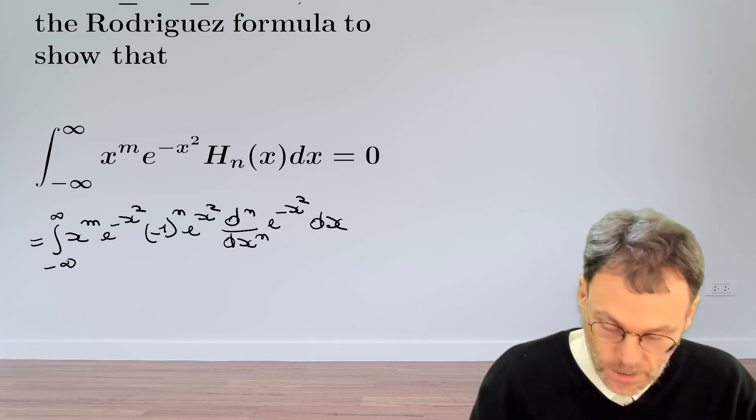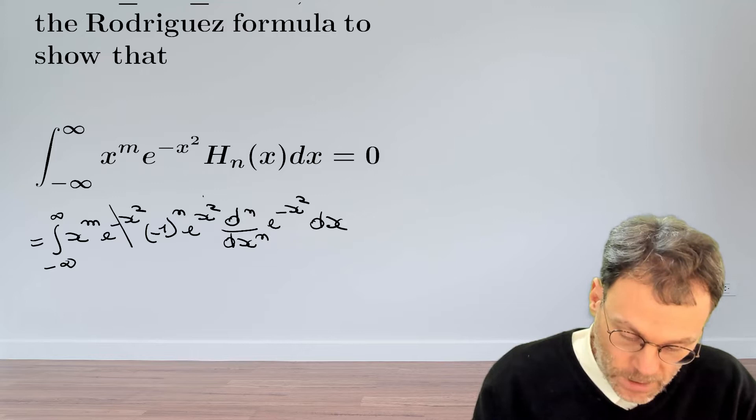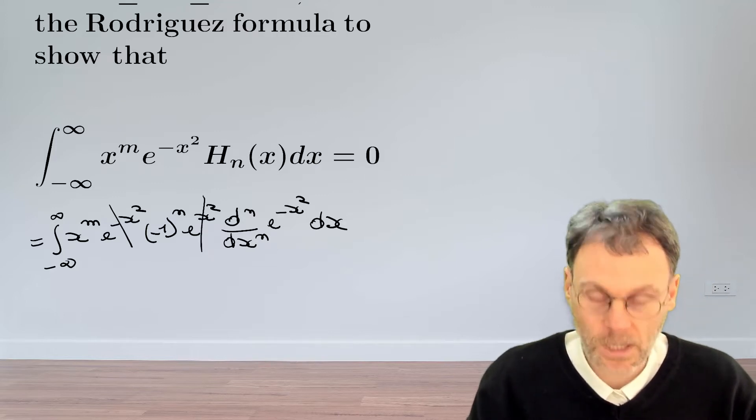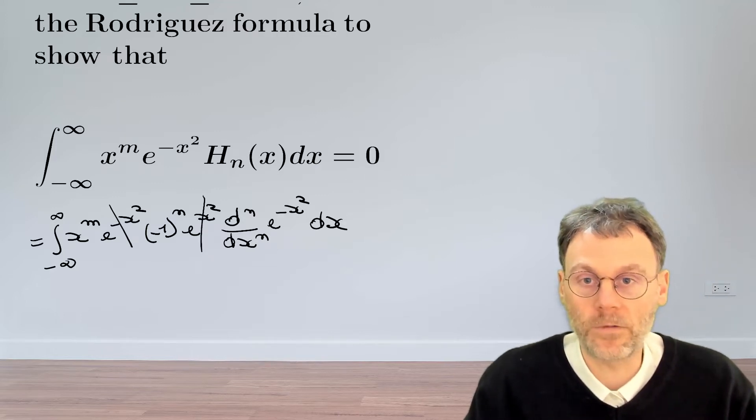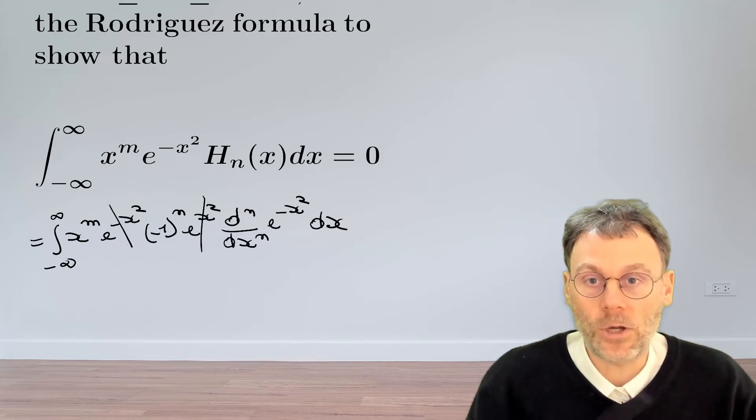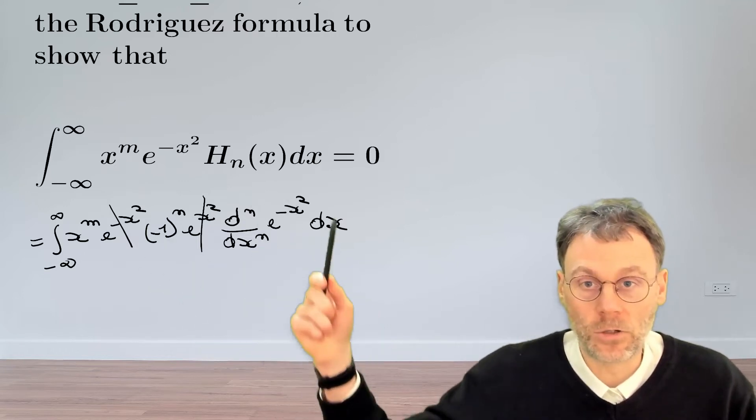Good news is that exponential minus x squared and exponential plus x squared cancel. So this simplifies a little bit. And then the question is, how are we going to tackle this integral now?